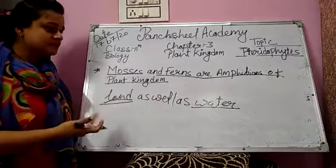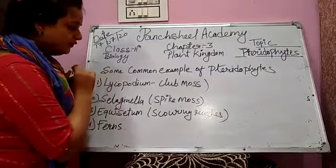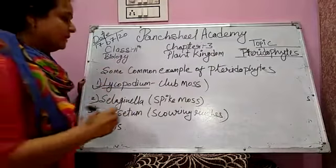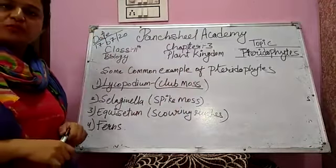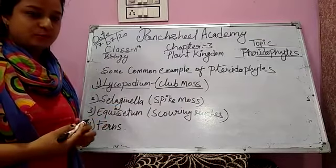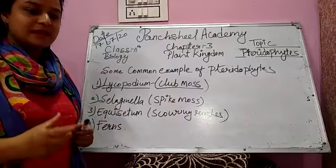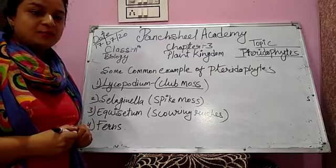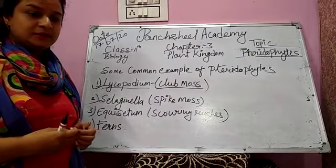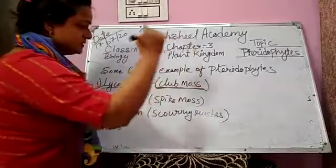Now we are discussing the types and some common examples of Pteridophyta. Firstly, we discuss Lycopodium, commonly known as club moss. The species of Lycopodium show a wide range in growth and formation of sporophylls. Most species possess a green photosynthetic stem covered with small scale-like leaves. These leaves are smaller and microphyllous. Terminal clusters are called strobili, which are club-shaped — that is why it is called club moss.